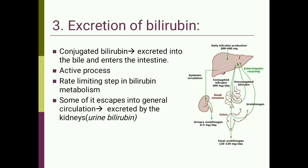The third stage is excretion of bilirubin. Conjugated bilirubin from the hepatic cell is excreted into the bile and then enters the intestine. This is an active process and is the rate-limiting step in bilirubin metabolism. Some of this bilirubin escapes into the general circulation and is excreted by the kidneys in the urine as urine bilirubin.